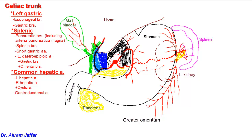The gastroduodenal artery supplies the superior pancreaticoduodenal artery. As its name indicates, it supplies the head of the pancreas as well as the duodenum — there are duodenal branches and pancreatic branches to the head of the pancreas. The superior pancreaticoduodenal artery will anastomose with the inferior pancreaticoduodenal artery, which is a branch of the superior mesenteric artery. The superior mesenteric artery supplies the midgut, and the distal part of the duodenum — distal to the major duodenal papilla — is a midgut derivative supplied by the inferior pancreaticoduodenal artery.